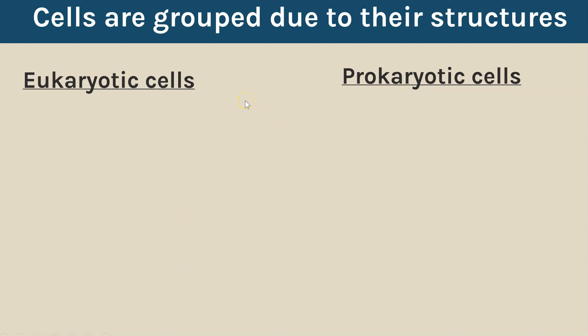First of all, this is just a way to group cells based on similarities or differences in their structures. Eukaryotic cells are plant and animal cells — you'll be familiar with that from Key Stage 3 — whereas prokaryotic cells are bacteria cells.